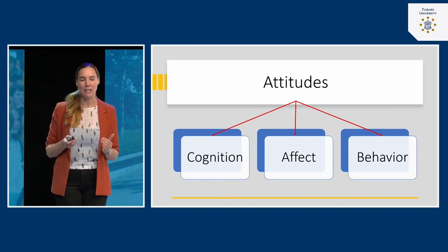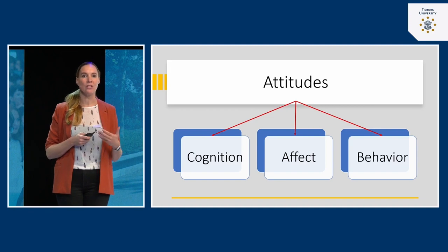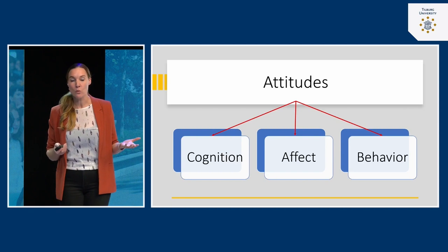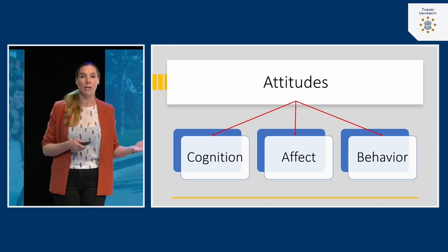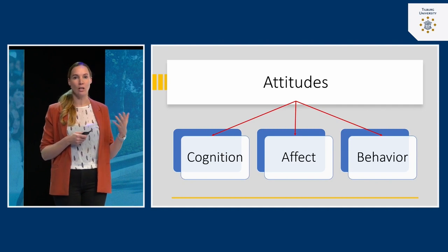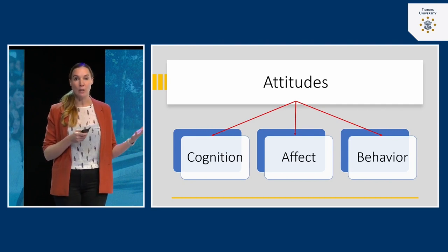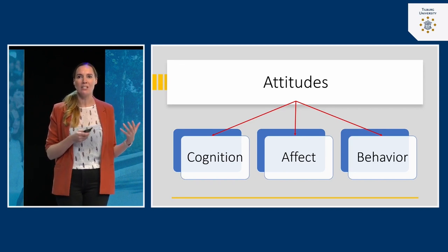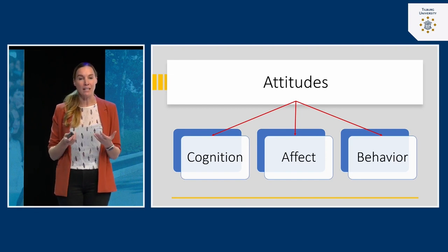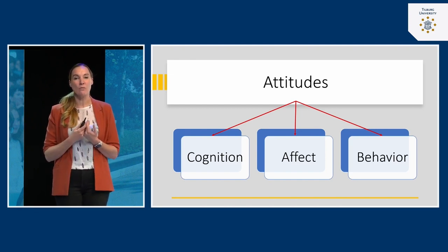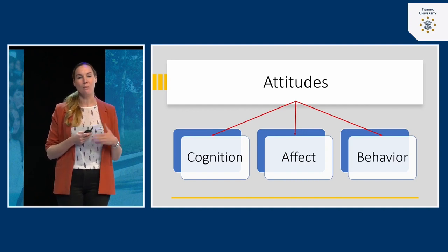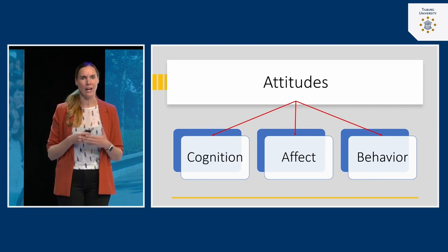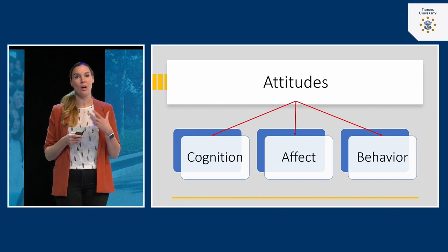It's important to know that for some attitudes, they are more cognitively based. For example, a certain type of vacuum cleaner — you may not have very strong feelings towards your vacuum cleaner, but when you buy one, you can look up information and read reviews. So a vacuum cleaner is pretty much cognitively based. But some topics are more affect-based — they give you very strong feelings of like or dislike, and that's probably what happened with the pictures I showed you earlier.